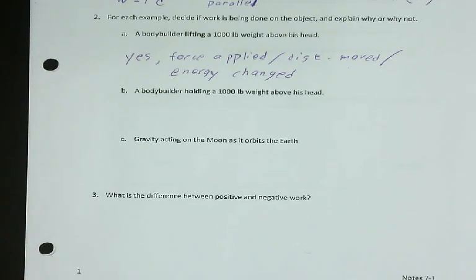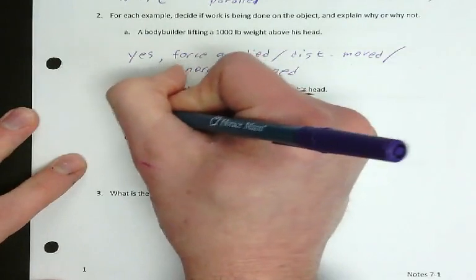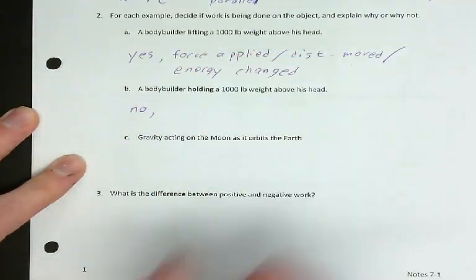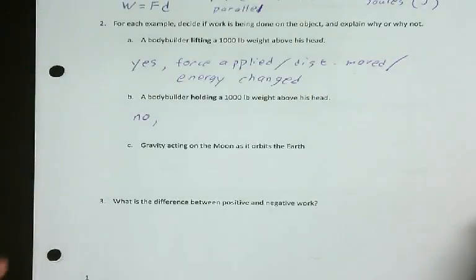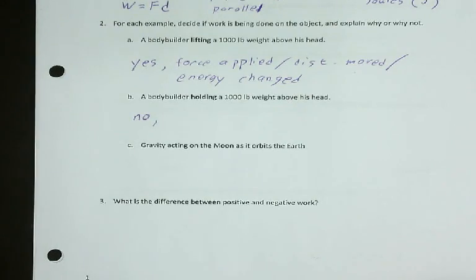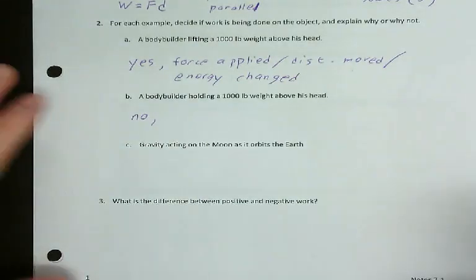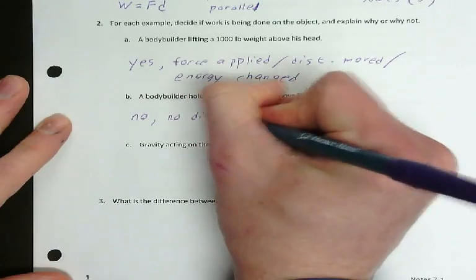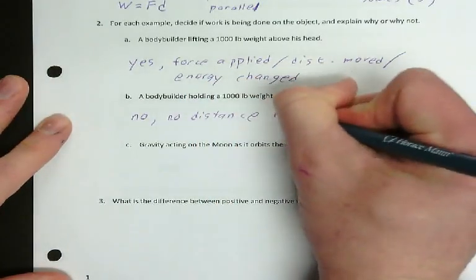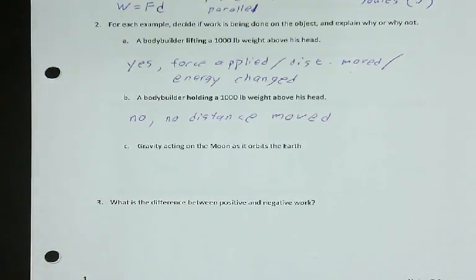For example B, the bodybuilder holding a thousand pounds above his head — that is not work. Even though there is a force, you could argue gravity is pulling down, there's no distance because he's not moving. He's applying a force against gravity, but he's not moving a distance. So because there's no distance, there's no work. Just like momentum requires a velocity, work requires a distance.